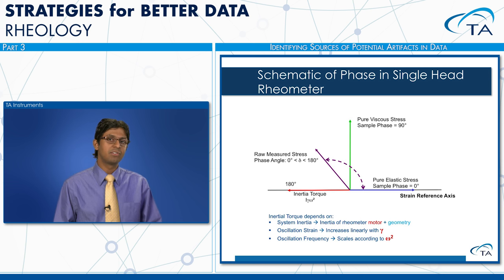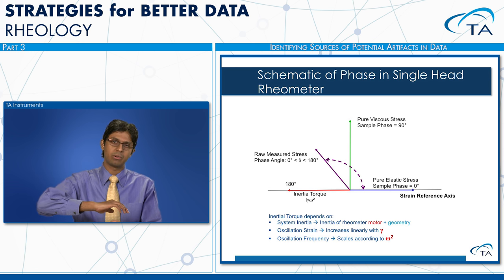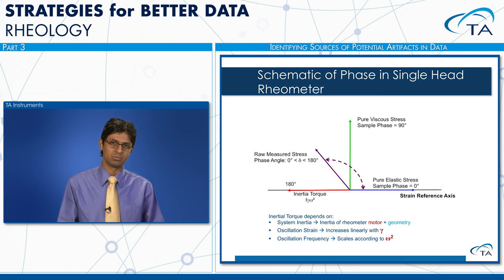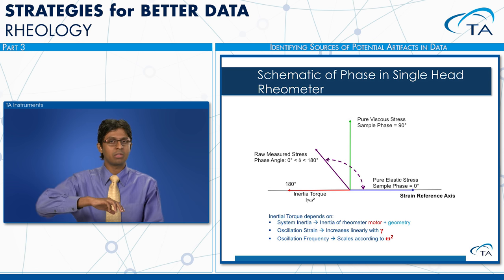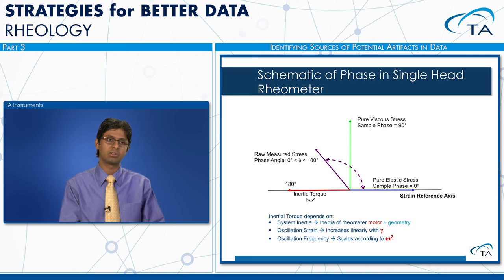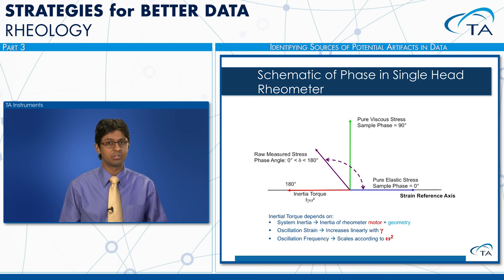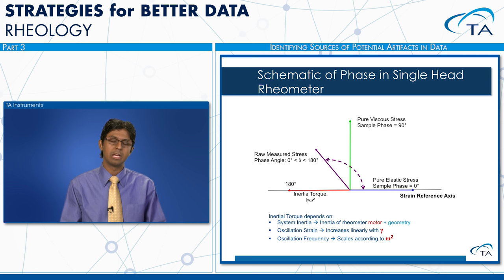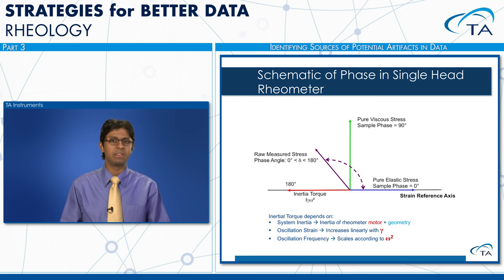With low viscosity samples at high frequencies, the torque required to accelerate the mass back and forth can become very large — that's where inertial torque comes into play. Inertial torque depends on three factors: system inertia (motor plus geometry), oscillation strain (inertial torque increases linearly with strain), and most importantly, frequency — inertial torque scales as omega squared, which is why these effects kick in at higher frequencies as seen with S60 and S3 silicone oils.